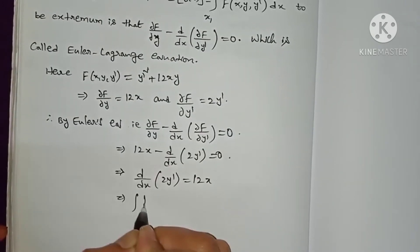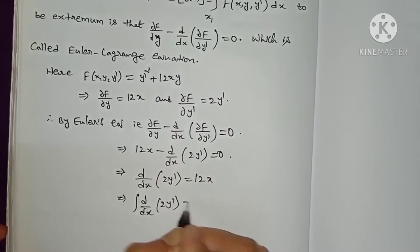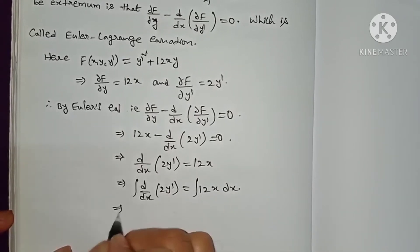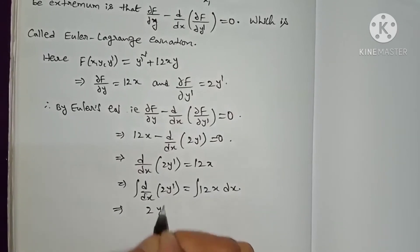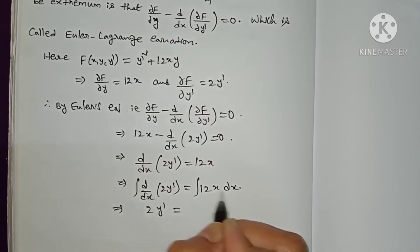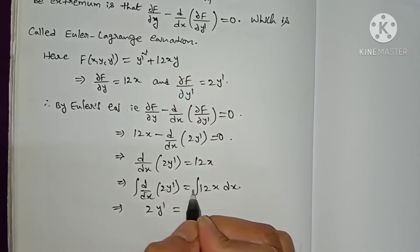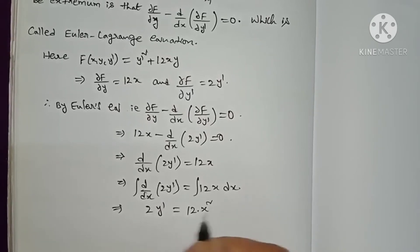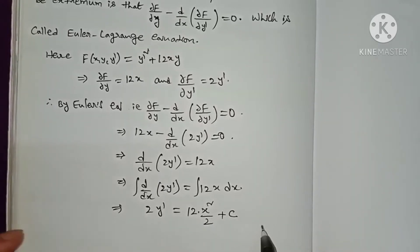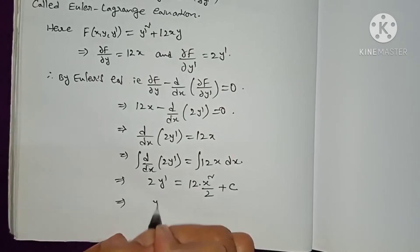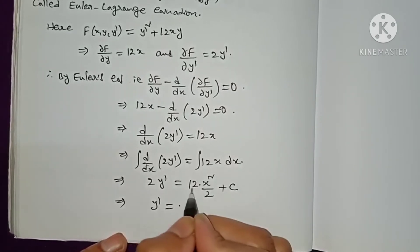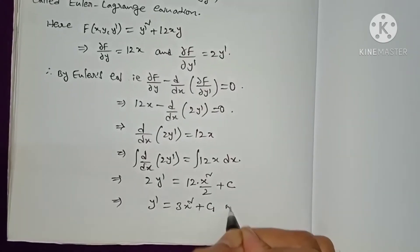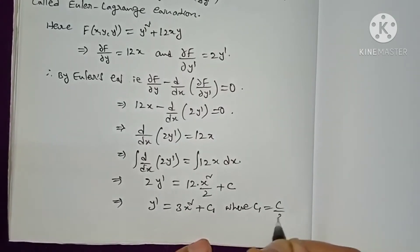Integrating both sides: ∫ d/dx(2y') dx = ∫ 12x dx. The integration and derivative cancel on the left side, leaving 2y' = 12 · (x²/2) + C = 6x² + C. Dividing by 2, we get y' = 3x² + C₁, where C₁ = C/2.